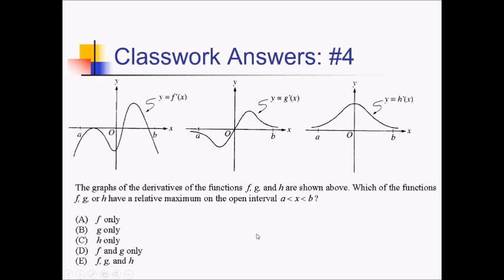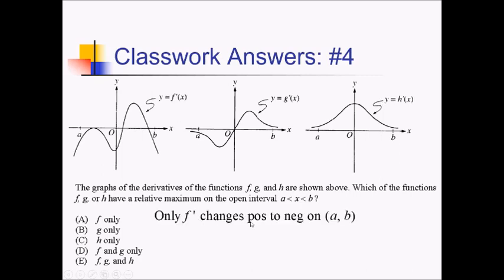For this problem, we're given the graphs of the derivatives of f, g, and h. We want to know which of the original functions — f, g, or h — has a relative max somewhere on the interval from a to b. If we're looking for a relative max on the original function, we want to know where the derivative changes sign from positive to negative. f prime changes positive to negative right before b. g prime changes negative to positive, but doesn't change positive to negative anywhere. h prime doesn't even touch the x-axis. So only f prime changes positive to negative on a to b; therefore only f has a relative max. That would be choice A, f only.